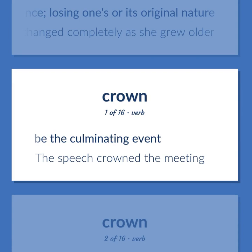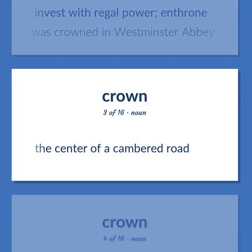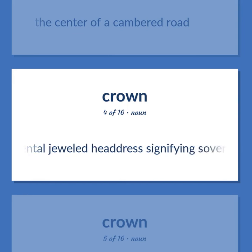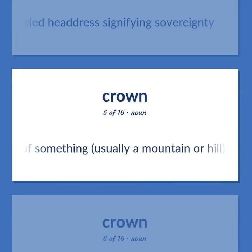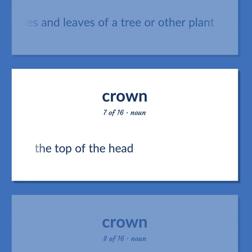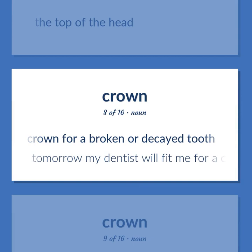Crown: Be the culminating event — the speech crowned the meeting. Invest with regal power and throne — the prince was crowned in Westminster Abbey. The center of a cambered road. An ornamental jeweled headdress signifying sovereignty. The top or extreme point of something, usually a mountain or hill. The upper branches and leaves of a tree or other plant. The top of the head. Dentistry: dental appliance consisting of an artificial crown for a broken or decayed tooth — tomorrow my dentist will fit me for a crown.